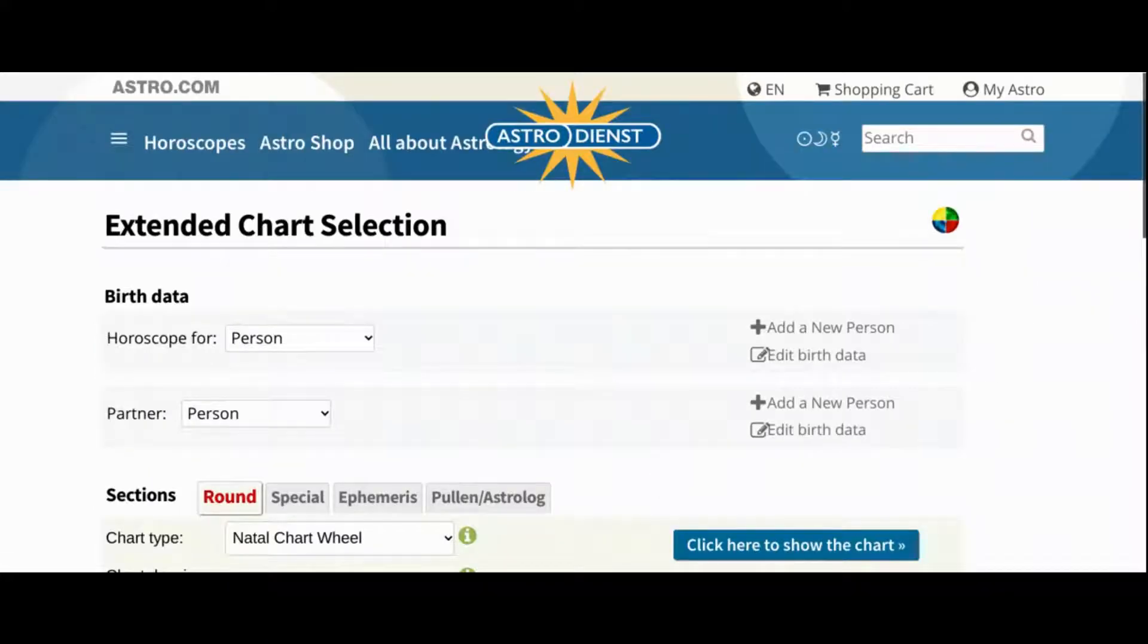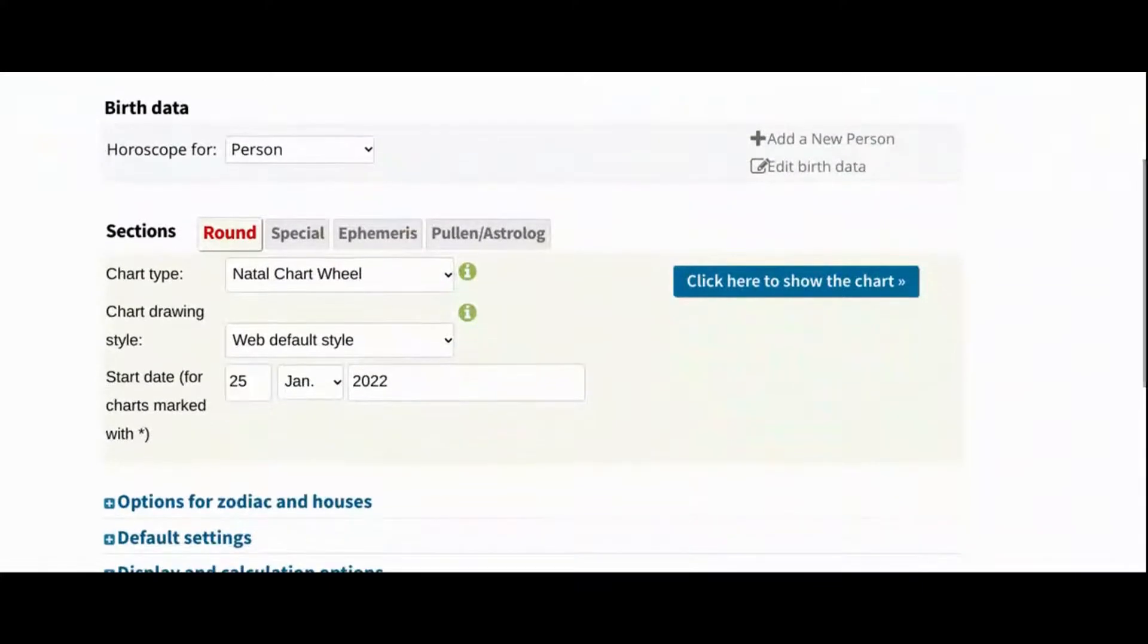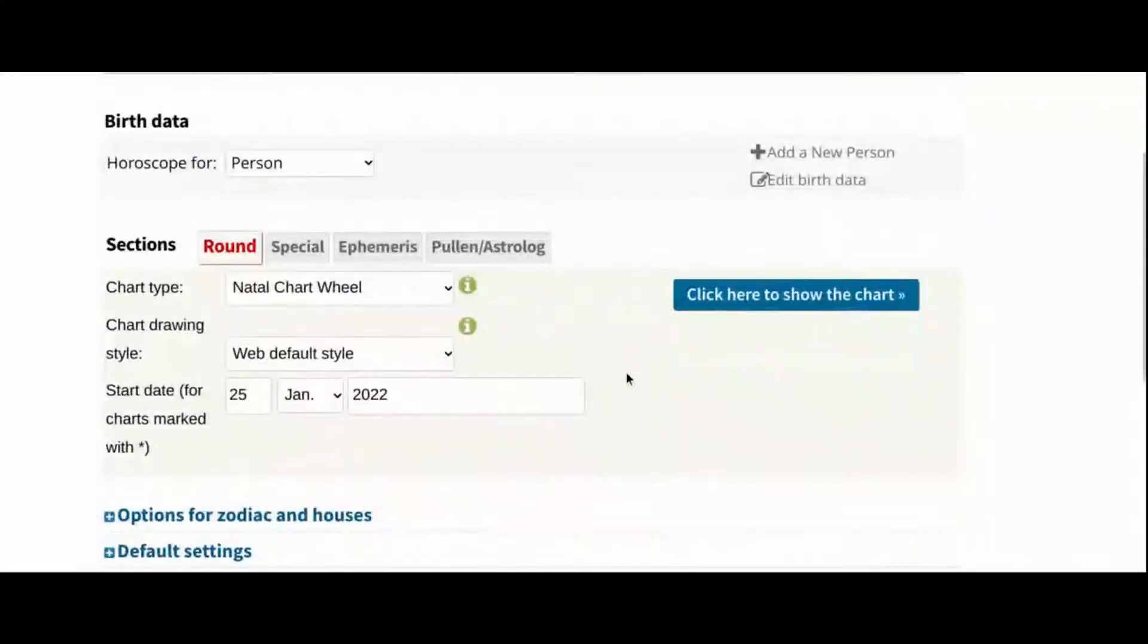In Extended Chart Selection there are a lot of options. Natal Chart Wheel is already selected in the drop-down menu for Chart Type.